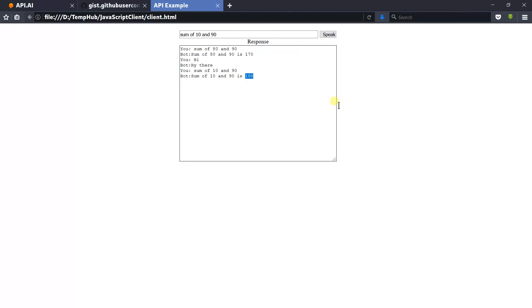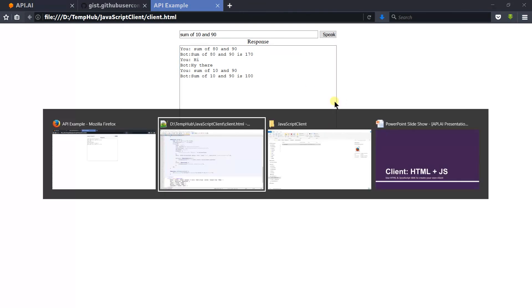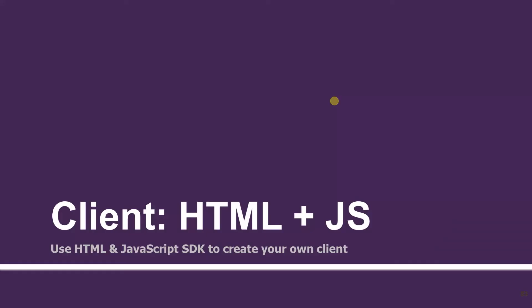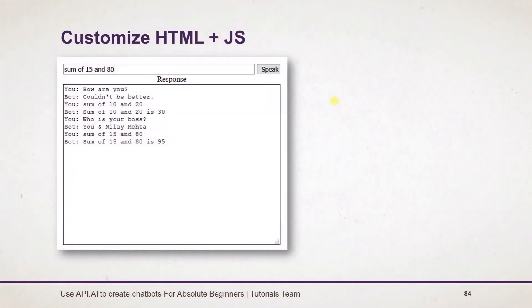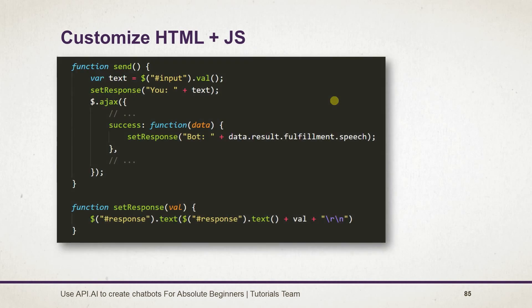Let's see what we learned in this session. We used the JavaScript SDK to create our own client. We copied the example from the api.ai docs and made some changes as per our requirement. You can make some more advanced changes too.